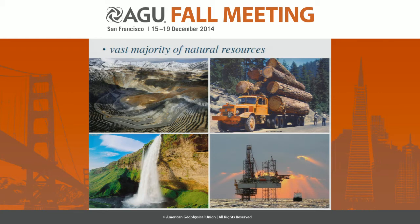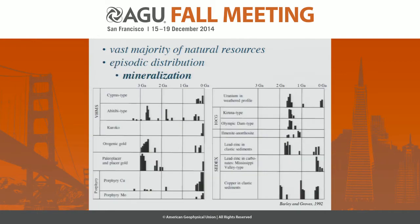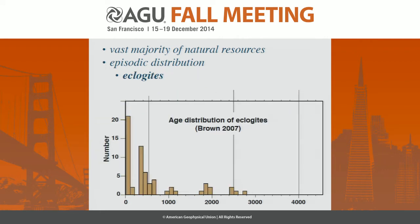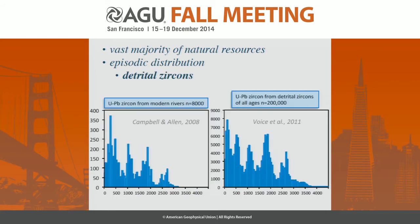The reason why we need to figure out how to do this is because the vast majority of our natural resources are contained in the continental crust, and when we look at the temporal distribution of many of those natural resources, we see an episodic distribution — episodic distribution of mineralization, the same thing in passive margins, and then aside from natural resources, the same episodic distribution in eclogites, granulites, and probably most famously, detrital zircons.